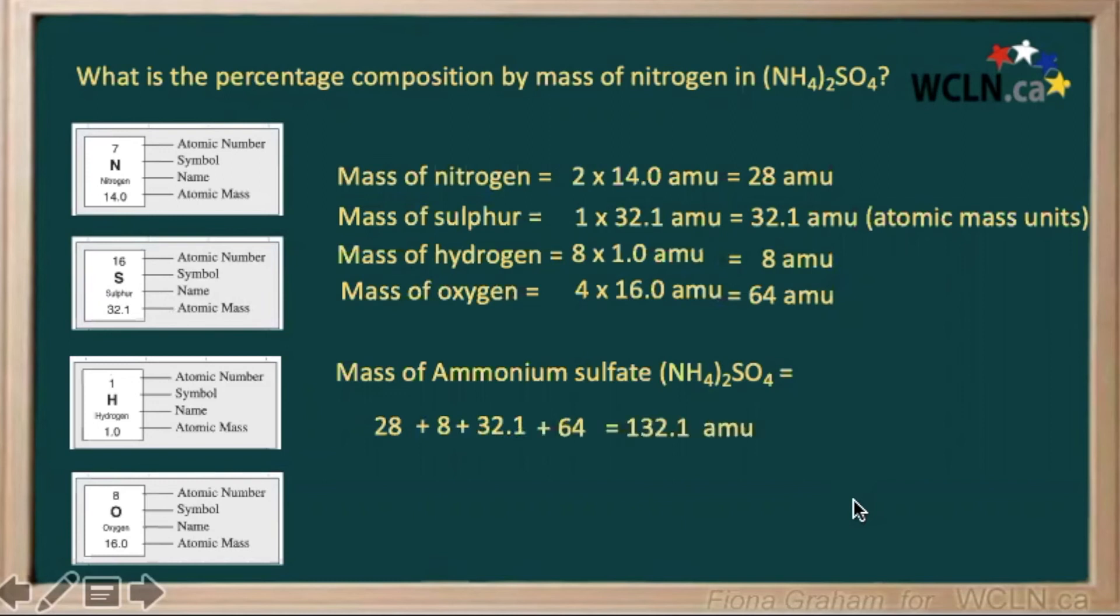So to find the percentage composition by mass of our nitrogen in our ammonium sulfate, we would calculate, compare its mass to the mass of our whole compound, giving us 0.2119.